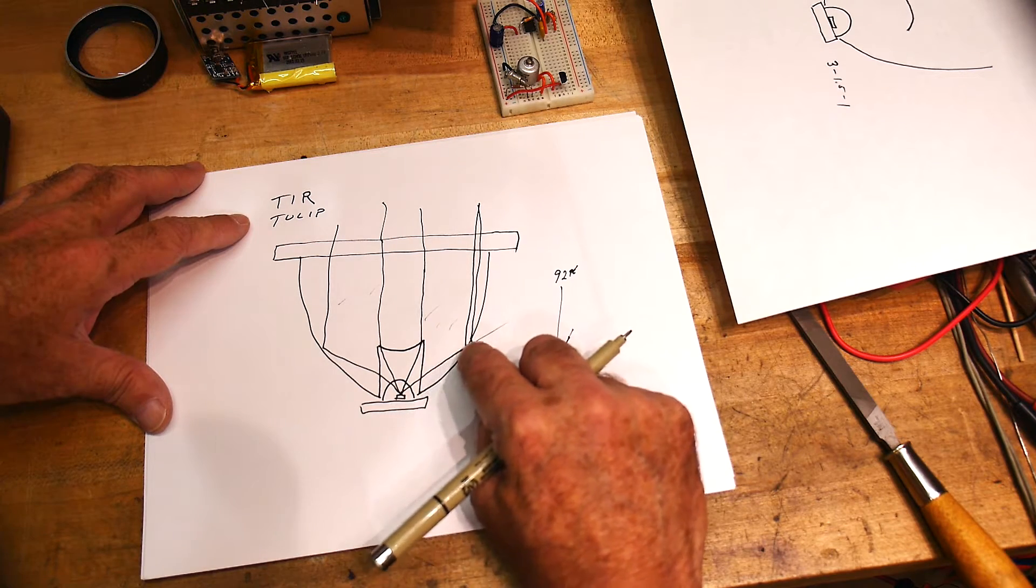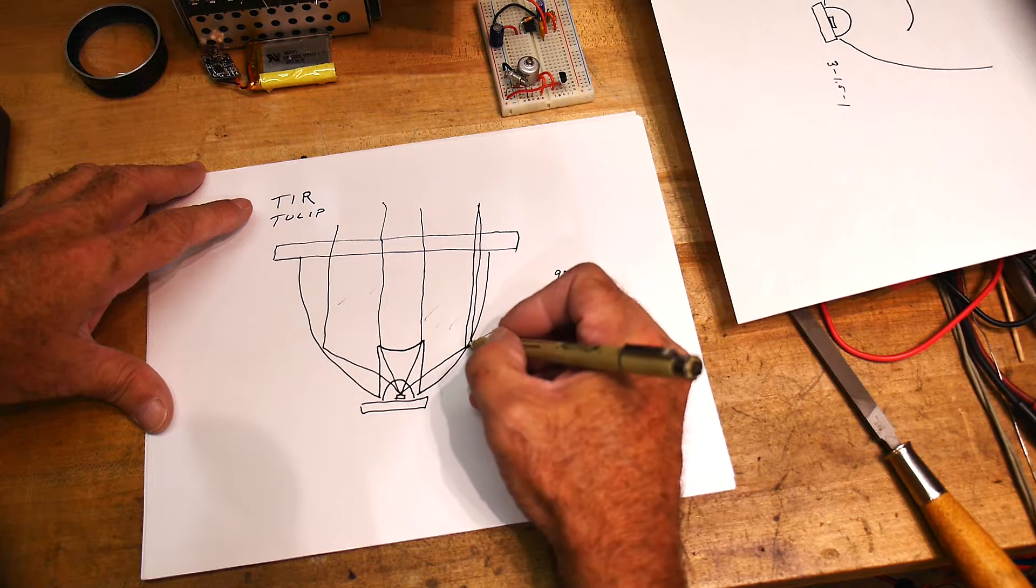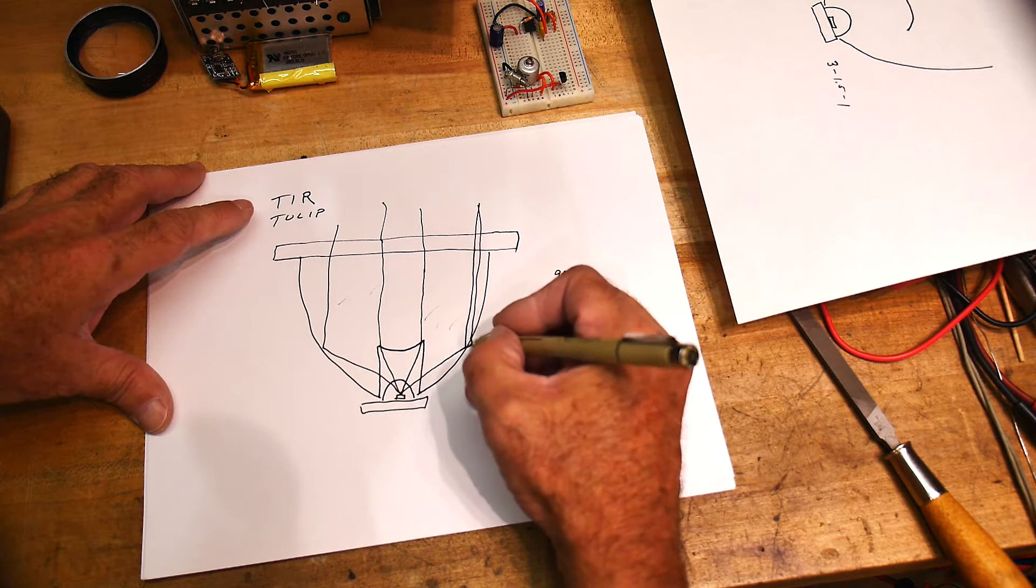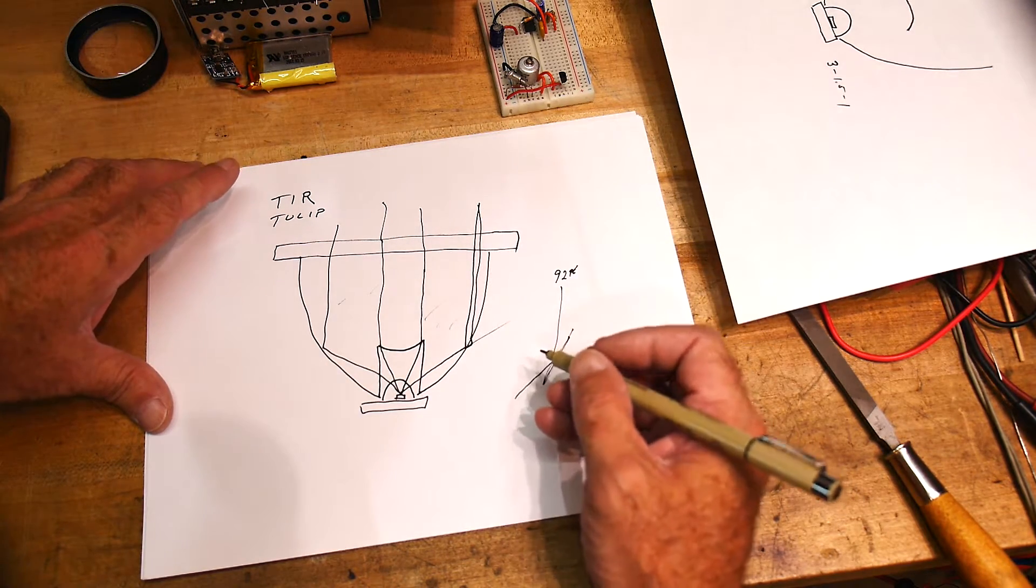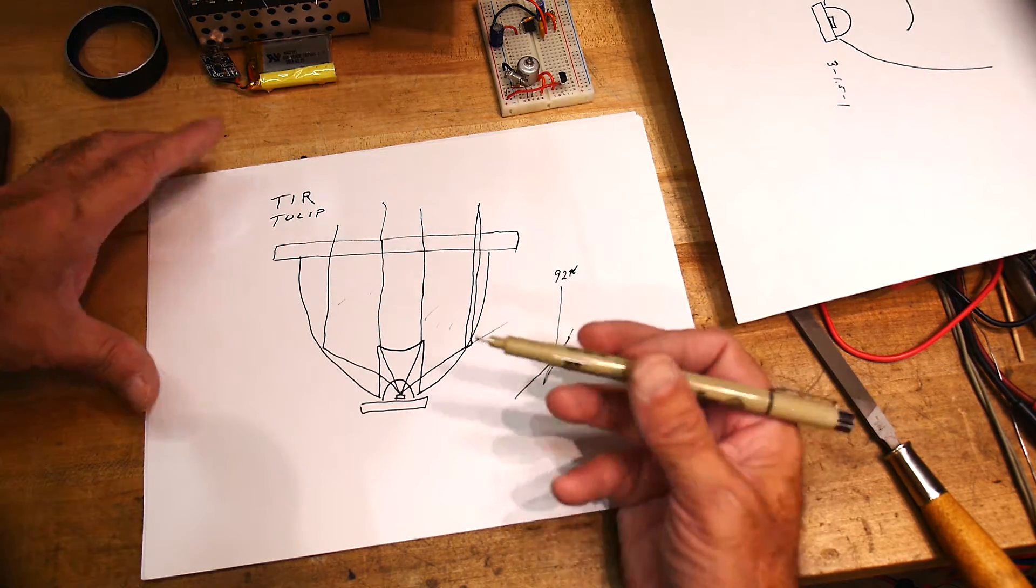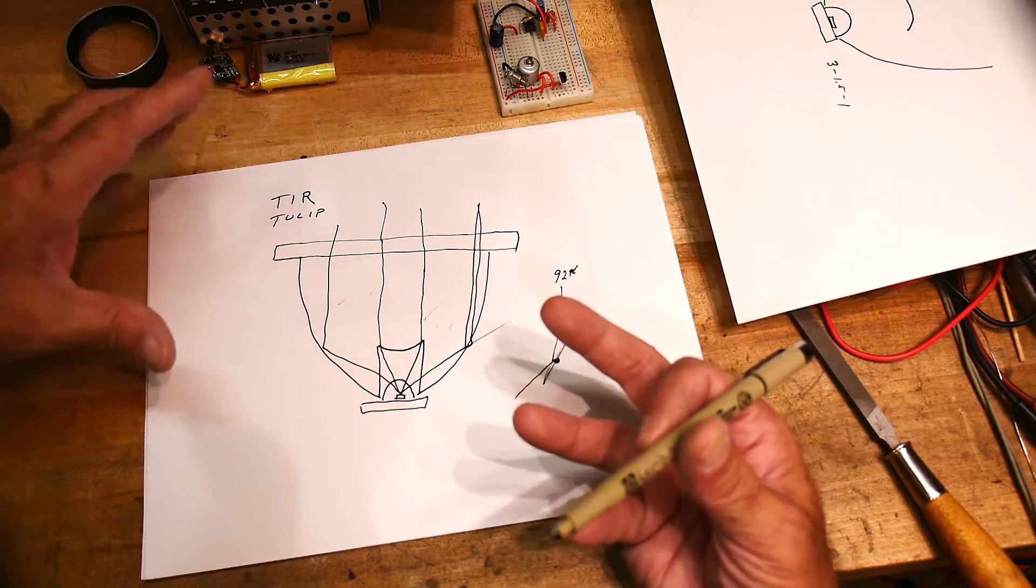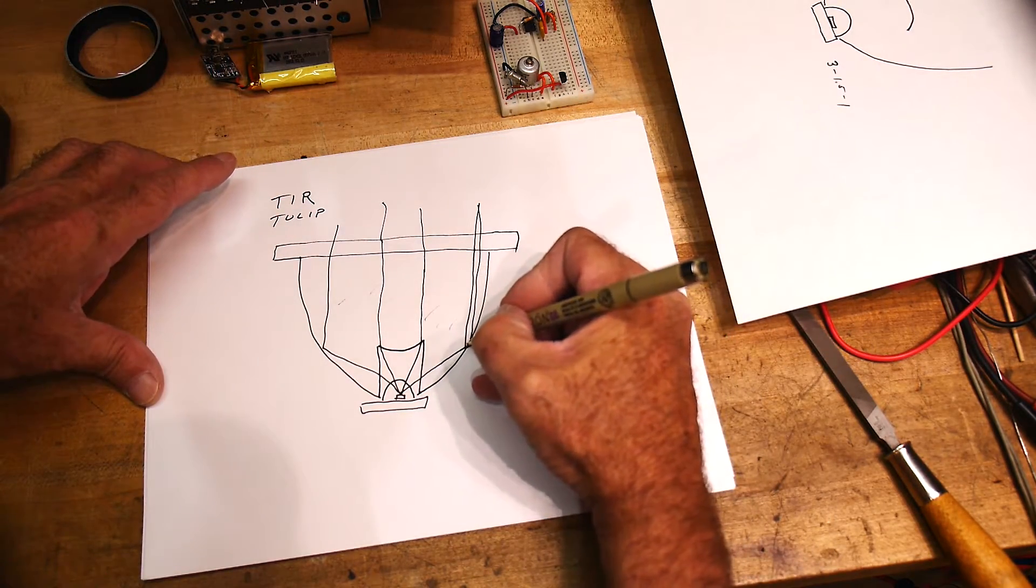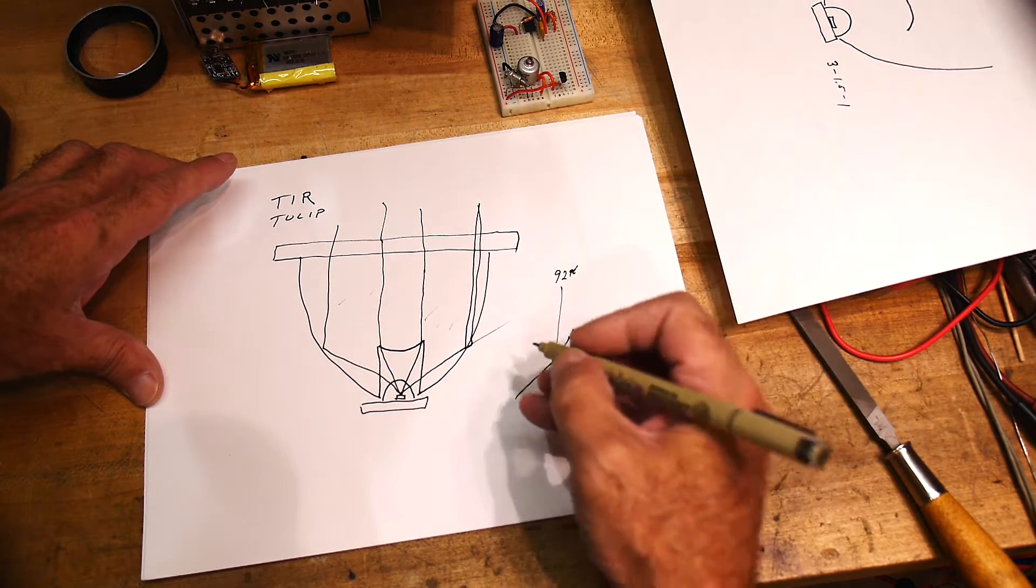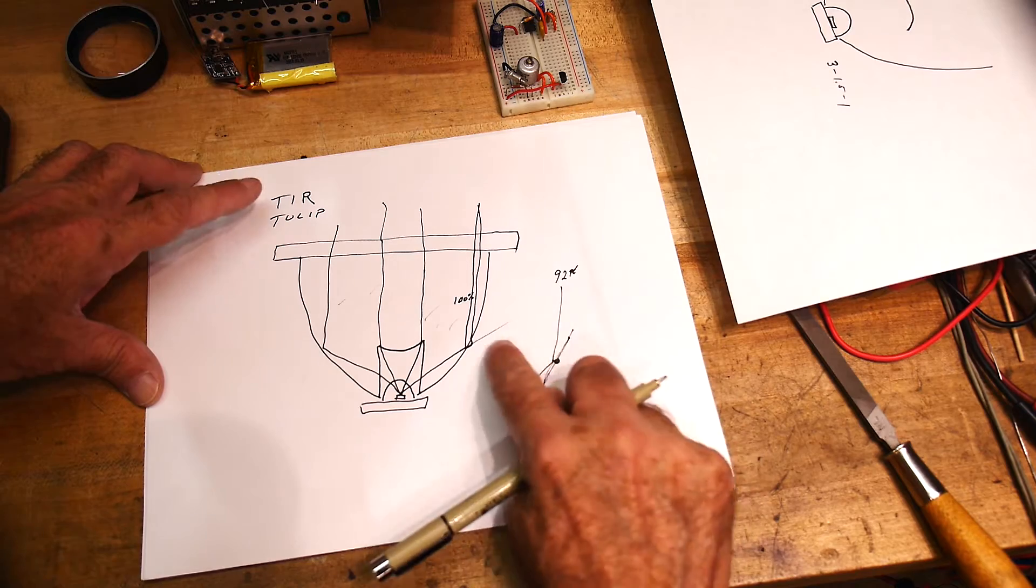But the evanescent wave actually pokes out of the medium here just a little bit and then sucks back in again because it doesn't see a good impedance match. Really, it's all related—optics and electronics, it's all the same stuff. And so what it means is you get 100% of the light reflected. You don't get 92%, you get 100% of the light reflected.